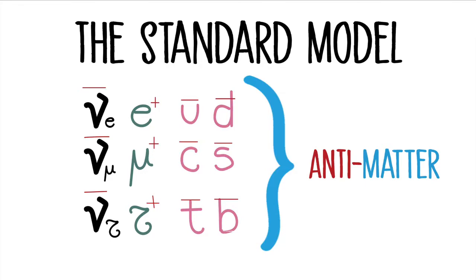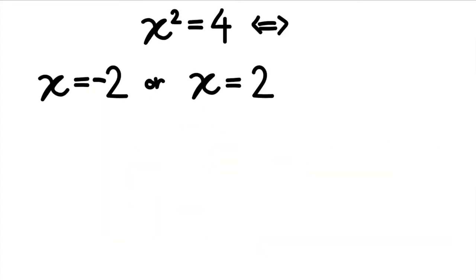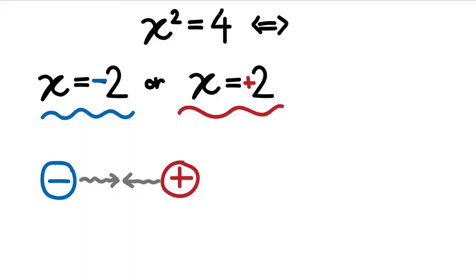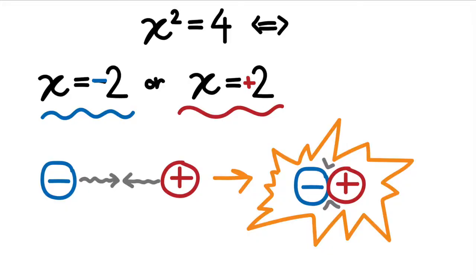The counterpart of this so-called matter is what we call antimatter. We can think of them as two solutions to the same equation. Particles and antiparticles share almost all characteristics like mass and spin, but have opposite charge — we can look at this as the opposite sign of the two solutions. When a particle and their counterparticle meet, they annihilate, releasing energy in the form of radiation.